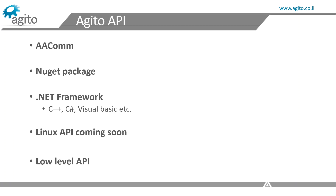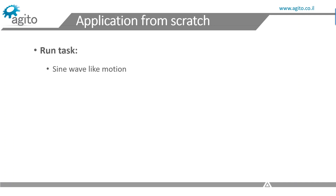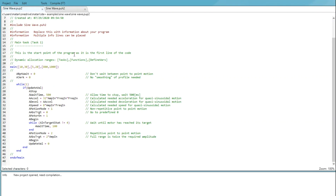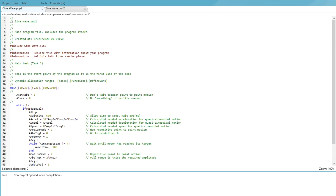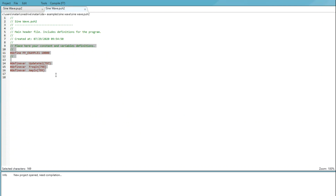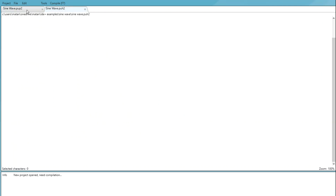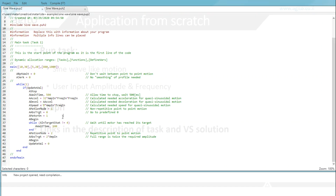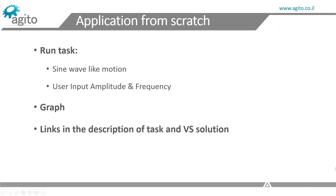Let's start writing an application in Visual Studio. We're going to build an application that runs a task which executes a sine wave-like motion, and all the user needs to do is input the amplitude and the frequency. The task has already been downloaded to the controller. We'll also put a graph which shows the motor position. Let's open up our IDE Plus and take a quick look at the task — it defines a point-to-point motion based on two user inputs: amplitude and frequency. For more information about our IDE Plus, check out our video on the topic — link in the description. I'll also leave links to the task and Visual Studio solution we're going to create.